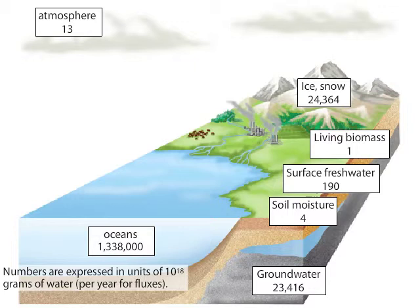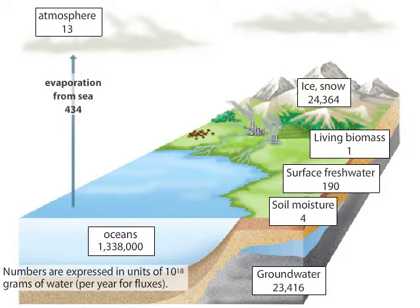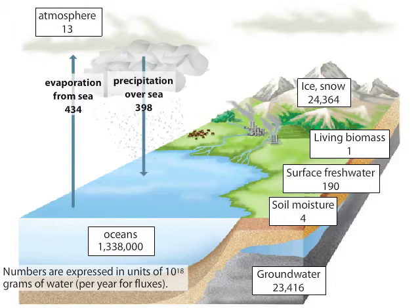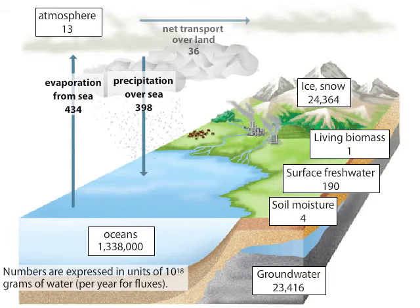The oceans contain most of Earth's water. The evaporation and precipitation of water on land and in the ocean drive the cycling of water throughout the globe. Water leaves the ocean through evaporation. Most of this evaporated water returns again to the ocean in the form of precipitation. However, a small portion does not immediately return and is transported by winds over land.